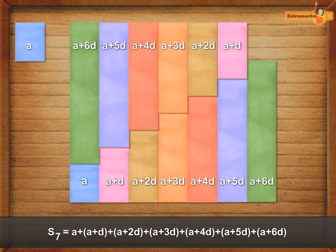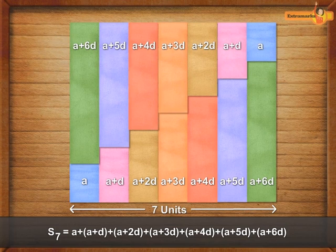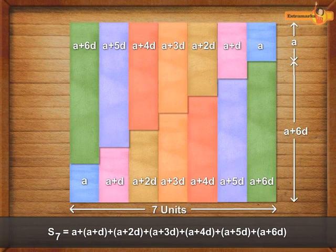By continuing this way, we will get a complete rectangle of length equal to 7 units and width equal to the length of the first strip plus the length of the last strip, that is 2a+6d.